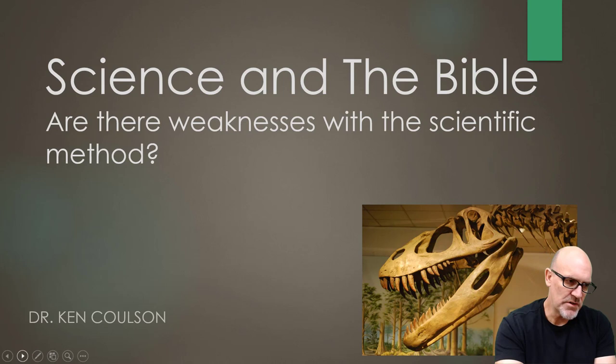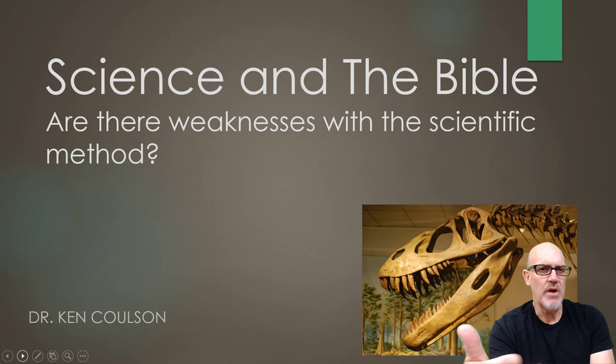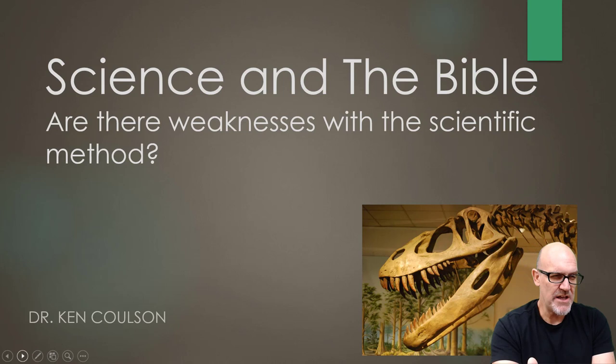We looked at the scientific method in the previous section and we were able to see that you have an observation, that you ask a question about the observation — basically a good educated guess. That then becomes your hypothesis using the words 'if' and 'then.' You then construct a test, an experiment, and you have an experimental group and a control group. You have a conclusion, an interpretation, and that feeds back into your observations again, and the process continues. That's the scientific method.